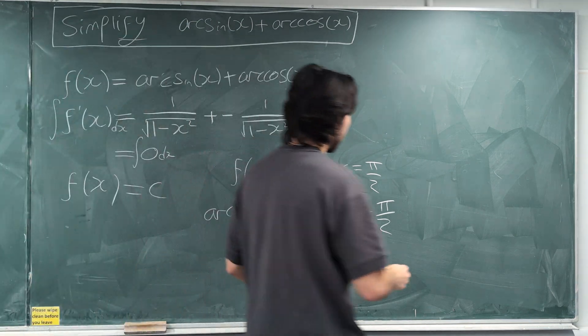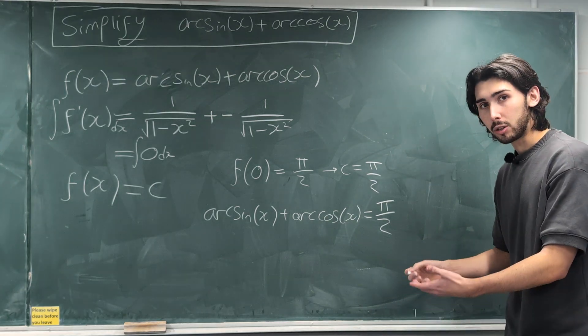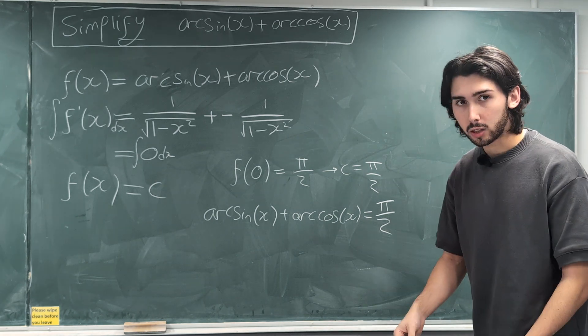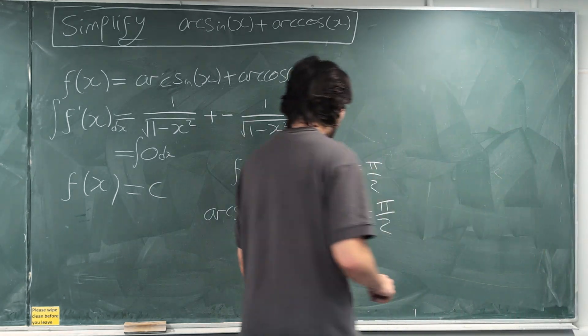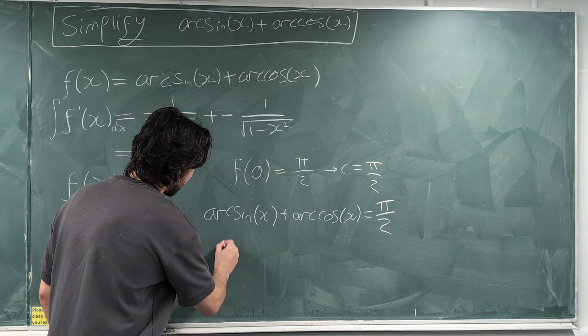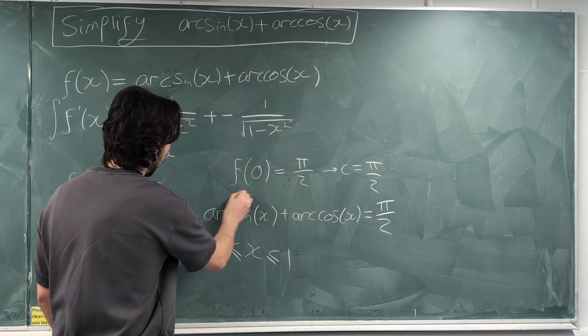And I'll just specify, it's a good idea, that arcsin(x) and arccos(x) are only valid for values of x between -1 and 1. So, this only works for values between -1 and 1, at least in the real numbers. So, this is when x is between and including -1 and 1.